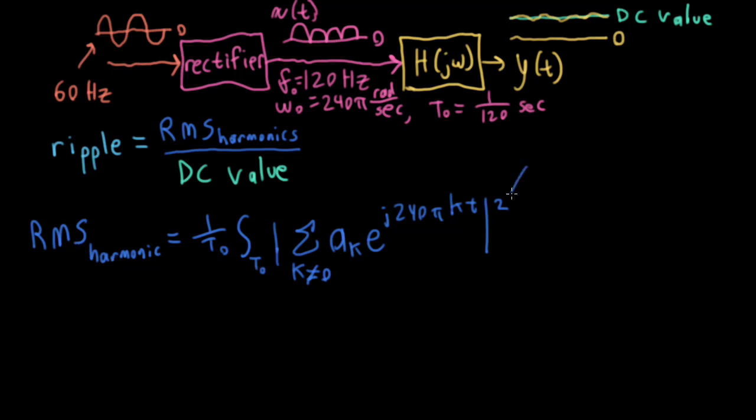So the s here indicates square, and that's this square right here, magnitude square. The m indicates the mean, and that's associated with taking the integral here and dividing by the period. And then r means root, so I want to put a big square root over here.